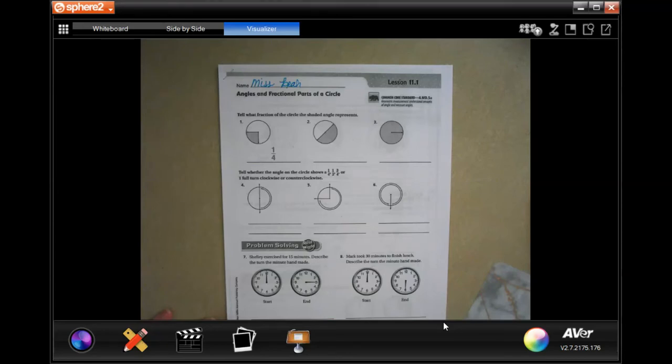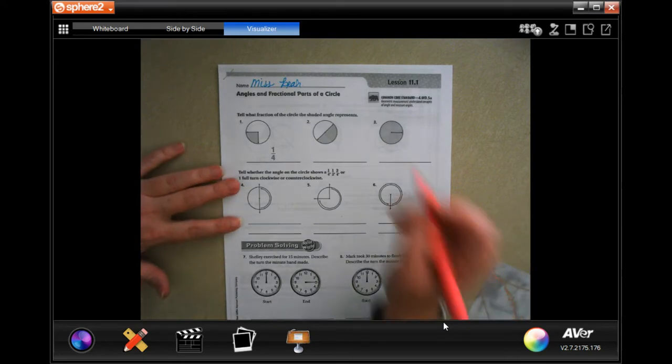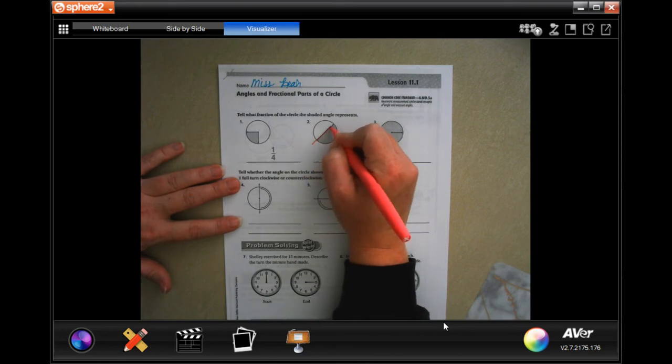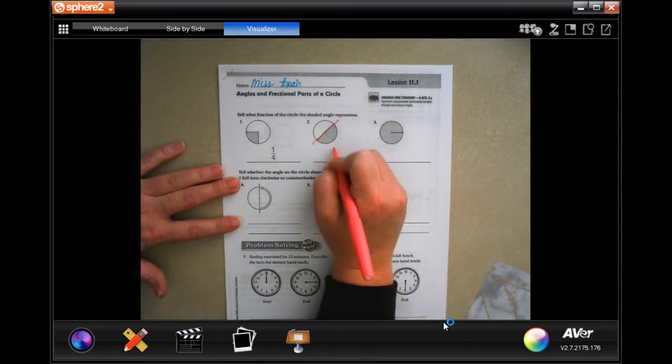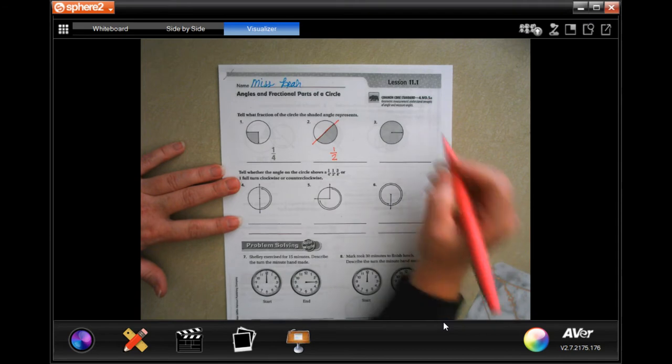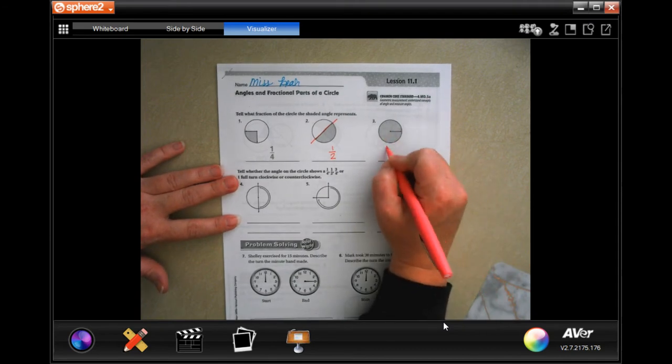Hey y'all, welcome to fourth grade chapter 11 lesson one. We're going to get started. It wants to tell what fraction of the circle is shaded. Pretty easy. This is going to be a half, right? That's a circle right in half. This one, the whole circle is shaded, so if we were to do a fraction we would put one over one, but we could just put one.